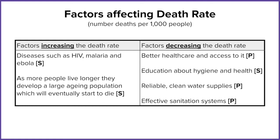As more people live longer in HICs, we start to see an elderly population. Because the elderly are reaching the end of their life, they're more likely to die, so HICs can also develop a higher death rate due to their ageing population. Decreasing death rates come from an increase in the provision of healthcare and education.